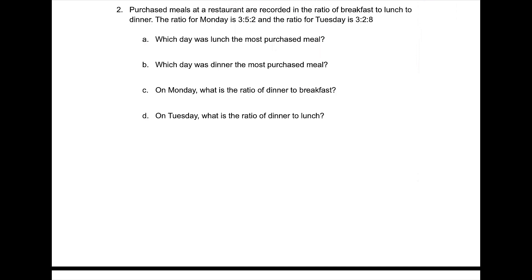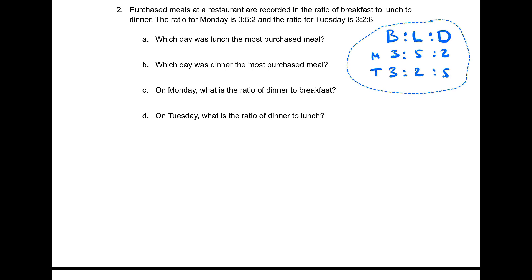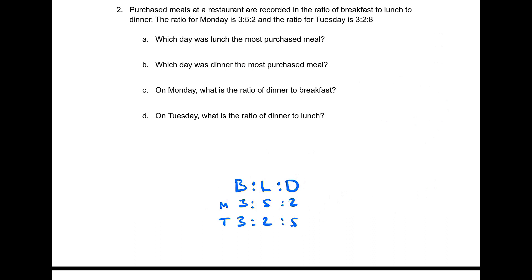Moving on to question number two. We can purchase meals at a restaurant, recorded using a ratio of breakfast to lunch to dinner. On Monday it is 3 to 5 to 2, and on Tuesday it is 3 to 2 to 5. Which day was lunch the most purchased meal? On Monday they had 5 for lunch, so the answer is Monday. Which day was dinner the most purchased? On Tuesday there was 5 versus 2, so it's Tuesday.